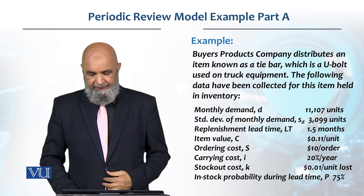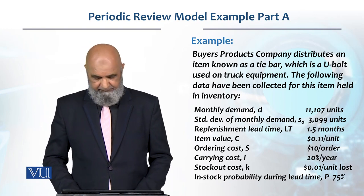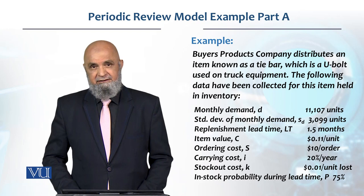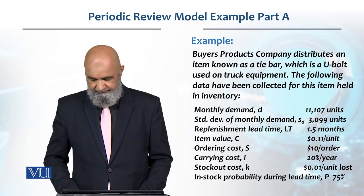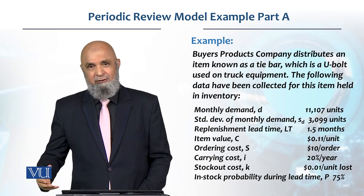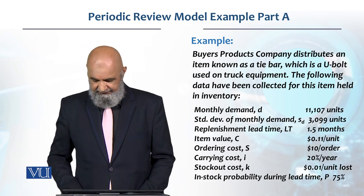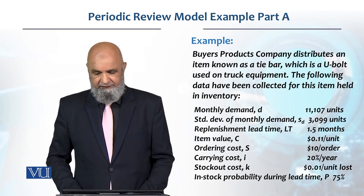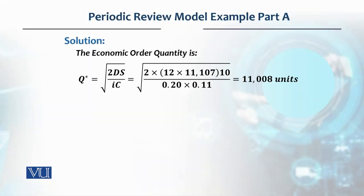The probability of stock-out in this case is 75 percent. On the basis of 75 percent, we will get the z-value, and on the basis of the z-value we will determine the E value. Let's solve this example — we need to find the economic order quantity.